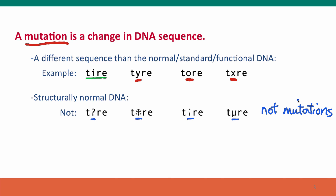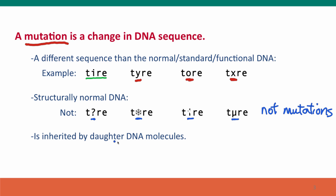Part of the reason those aren't considered mutations is that a mutation must be inherited by daughter DNA molecules — you have to be able to pass it on. Those anomalous structures are not things that DNA polymerase would recognize, and so they can't be inherited.